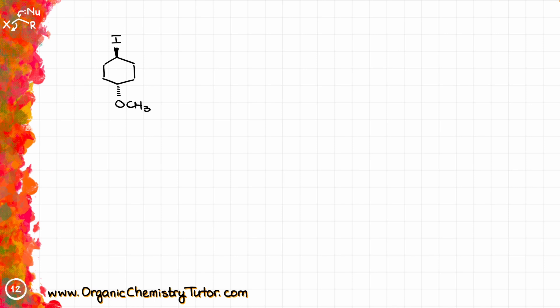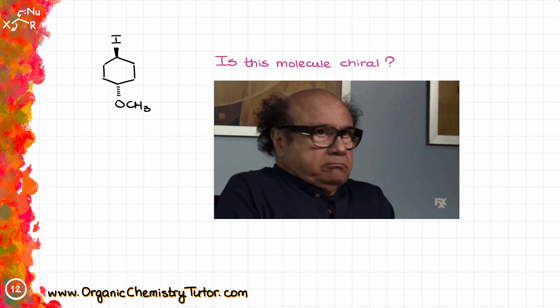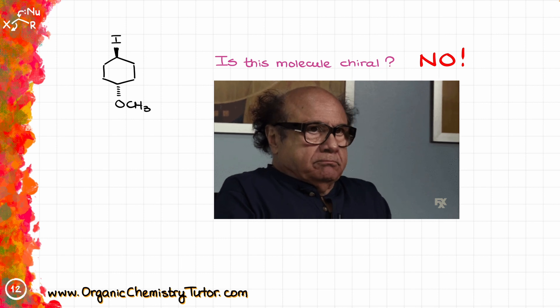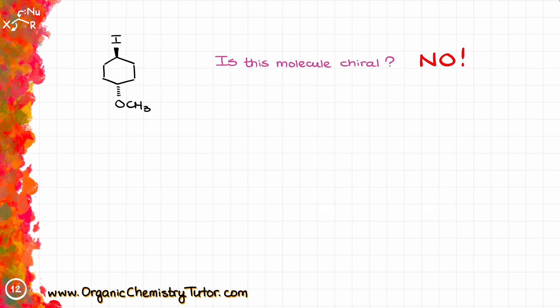So here is the molecule. Now the question is, is this molecule chiral? No. To be chiral, a molecule needs to have a non-superimposable mirror image, and this one has an internal vertical plane of symmetry going right through the molecule like that, so it will superimpose with its own mirror image.